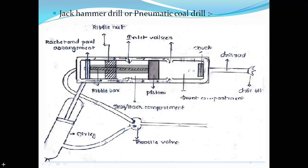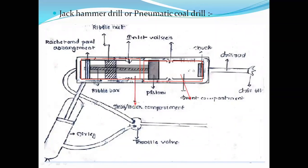The jackhammer drill is operated using compressed air. It consists of two compartments: one is called the rear compartment — the back portion — and the other is called the front chamber or front compartment. The front portion is the front chamber and the back portion is the rear compartment or rear chamber.